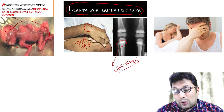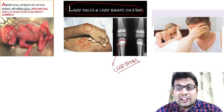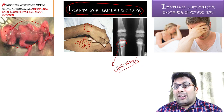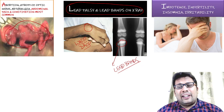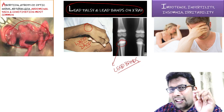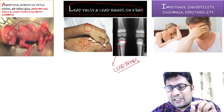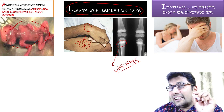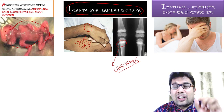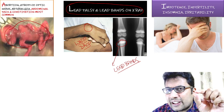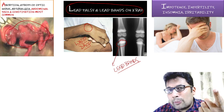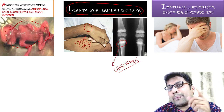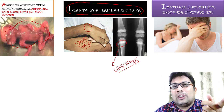I stands for impotency, infertility, insomnia, and irritability — all clinical features seen in lead poisoning. The earliest manifestation is facial pallor, and the most common findings are constipation and abdominal colicky pain.